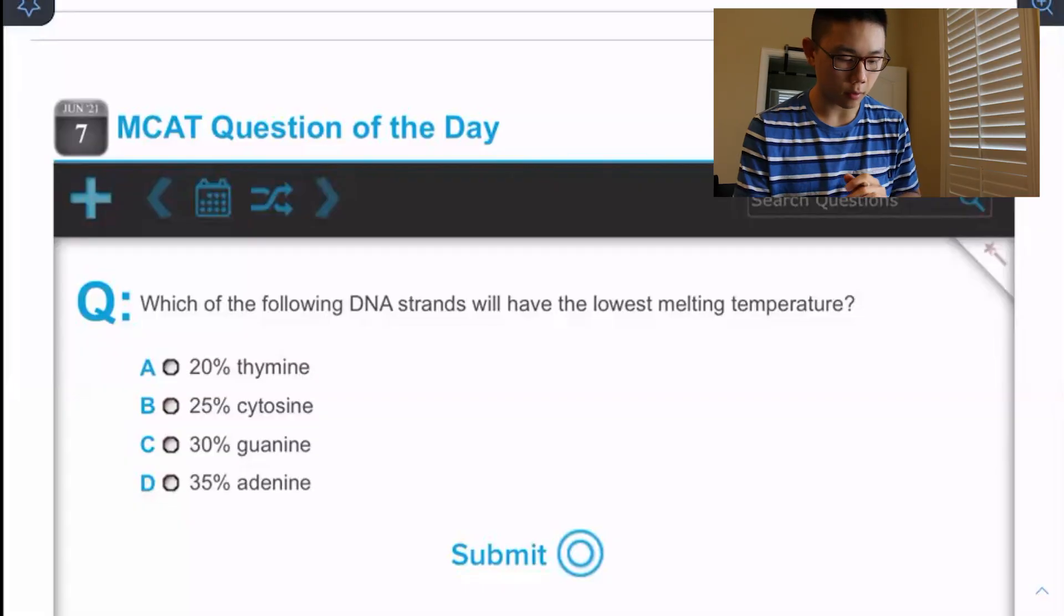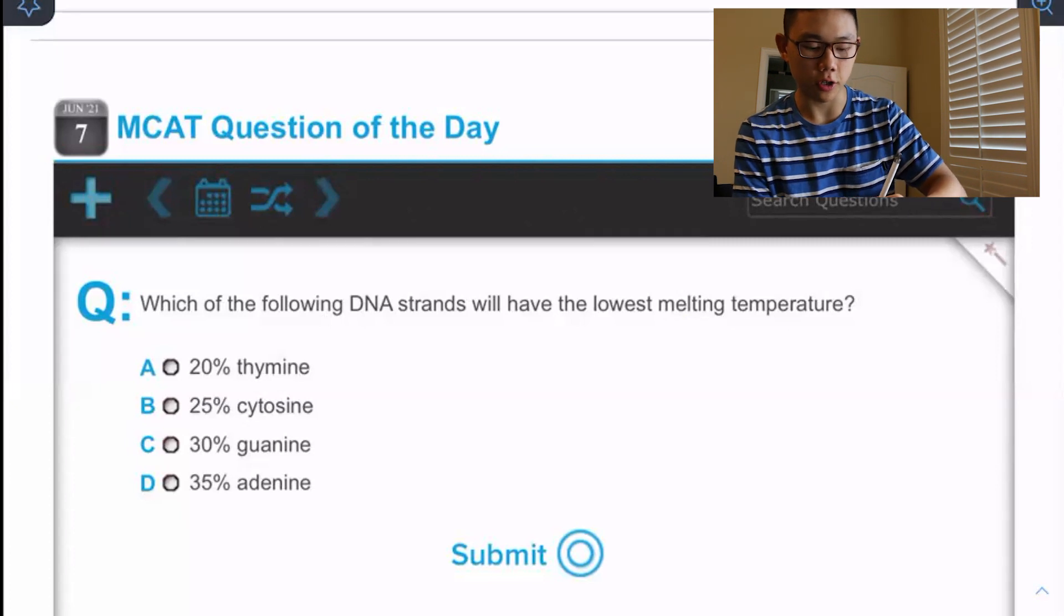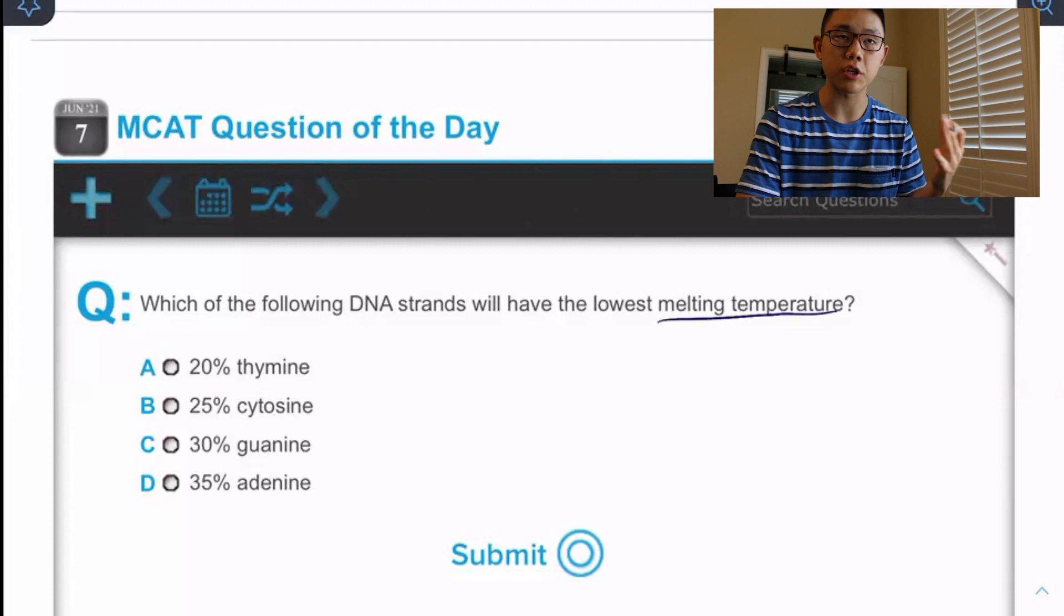But let's get into this question. I'll let y'all read it first. So immediately I see melting temperature. Whenever I see melting temperature, I'm thinking stability. If we want to measure the stability of something, we see how much heat do I need to add to this structure to denature it, to ruin it.